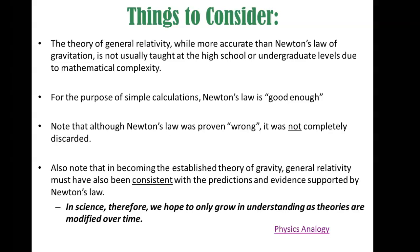Newton's law was proven wrong because it wasn't able to explain the precession of Mercury's orbit, but it wasn't completely discarded — it's still used to teach people the basics of gravity. Also note that in becoming the established current theory of gravity, general relativity not only had to explain Mercury's orbit, but also had to be consistent with all the other predictions and evidence supported by Newton's law. In science, you're always building your understanding — science makes things better and makes our understanding stronger.